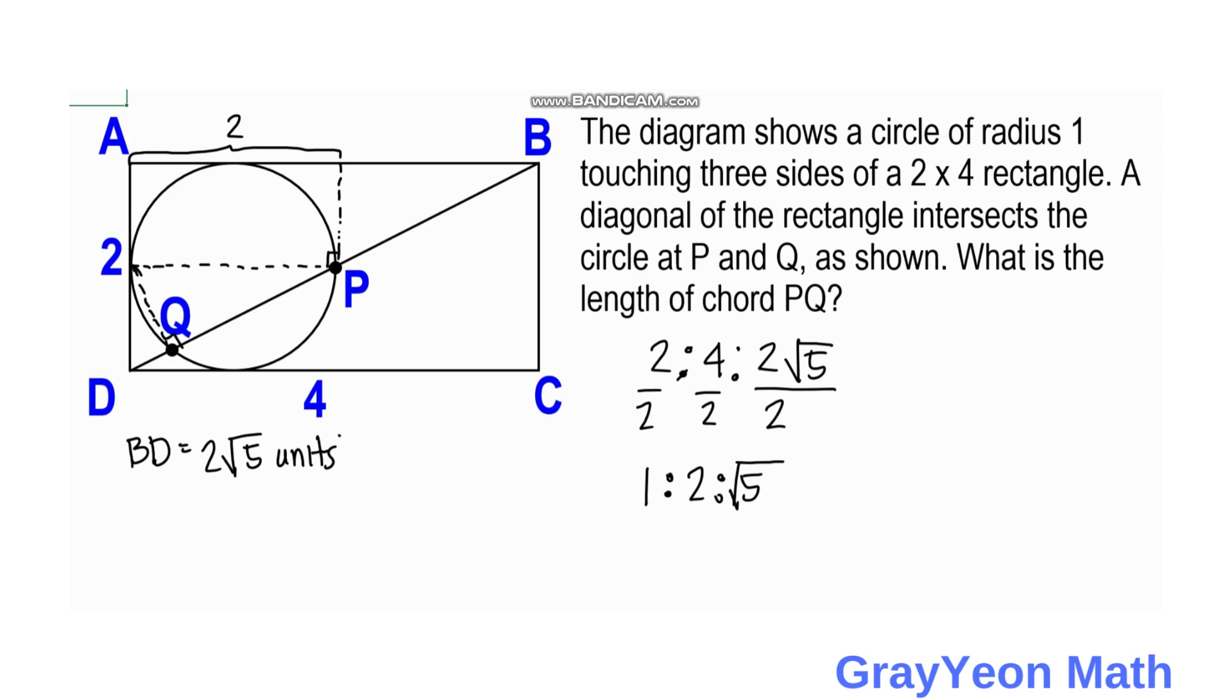Next that we need to notice is that if this angle is actually theta, then this angle is also theta because they are alternate interior angles, as you can observe.